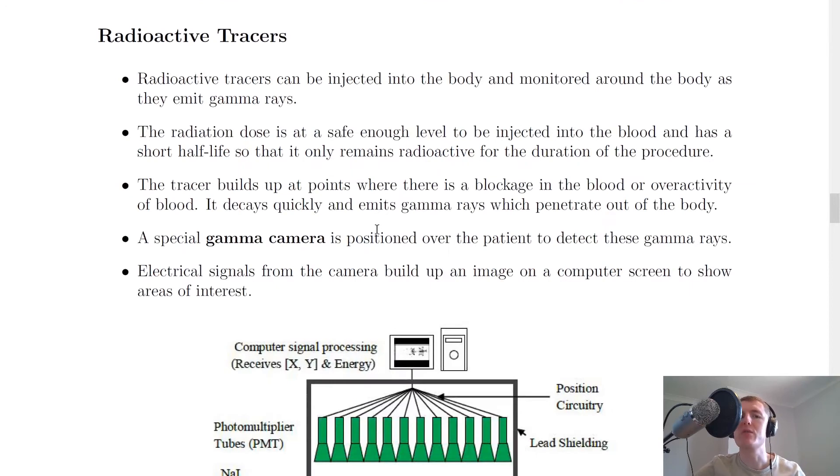Next we have radioactive tracers. Radioactive tracers can be injected into the body and monitored around the body as they emit gamma rays. The radiation dose is at a safe enough level to be injected into the blood and has a short half-life, so that it only remains radioactive for the duration of the procedure. A short half-life would be something like six hours, so that when you go into hospital in the morning, you get injected with this radioactive tracer, and by the time you leave hospital later that day, the radiation inside your body is at a safe enough level.